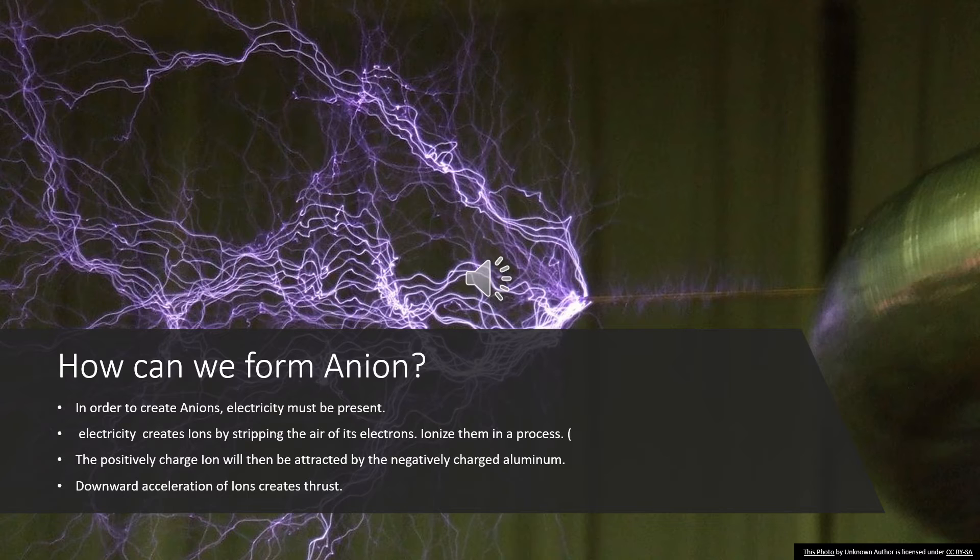So the positive charged ion will then be attracted by an equally charged aluminum foil, and there'll be a downward acceleration due to the ions moving down to aluminum foil.